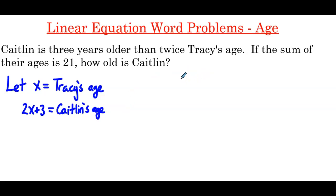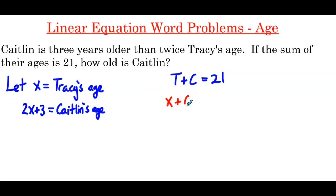The sum of their ages is 21, so Tracy plus Caitlin equals 21. Putting our expressions in terms of x: Tracy is x, Caitlin is 2x plus 3, and that equals 21.